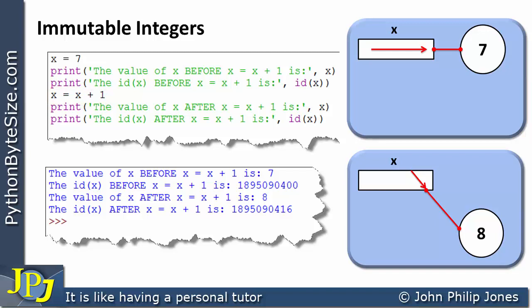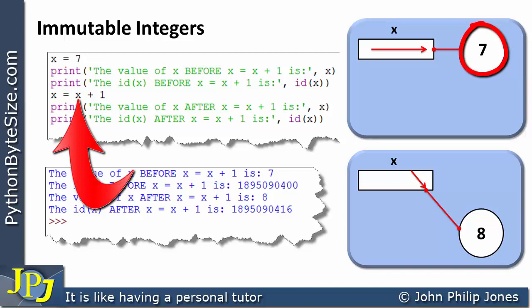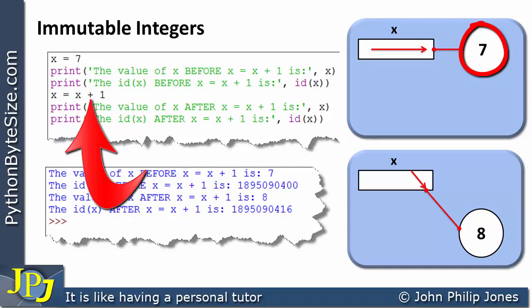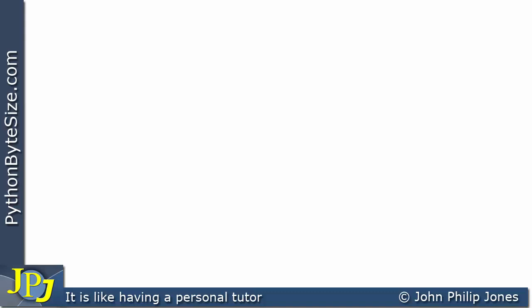Let's say something about the type of both of these objects — they are both examples of integer objects. At this point x has the value seven, and here we are adding one to it. This addition operation is possible because we're dealing with integers. When we talk about a type, it defines what you can do with the objects — you can clearly perform addition when dealing with integers.